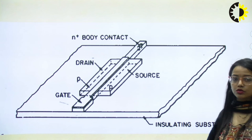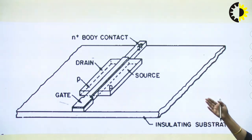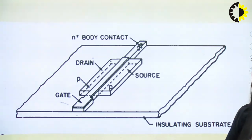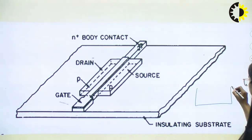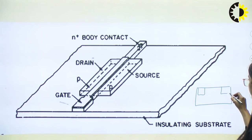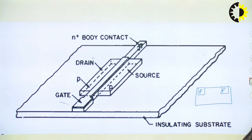In this diagram we can see how, at the bottom, we are having a plate-like structure which is the substrate. On this substrate we have made source, drain, and gate terminals. The source and drain are P-type and the gate has been made out of N+ material.